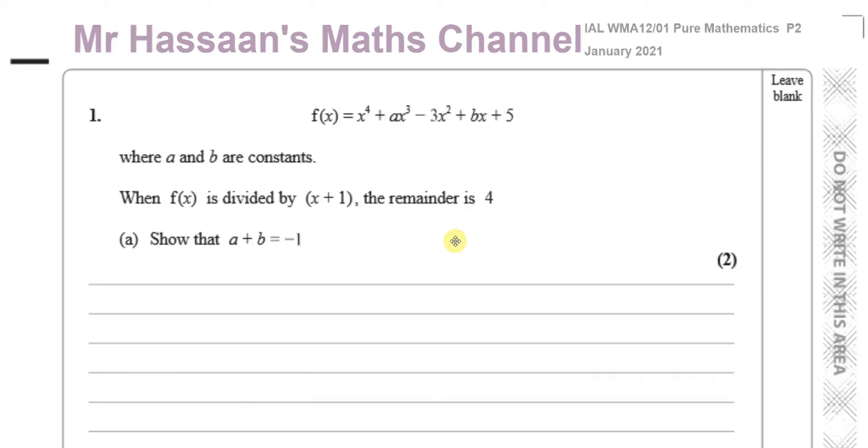Now, question number one is all about what's called the remainder theorem. Here we have a function f(x) = x^4 + ax^3 - 3x^2 + bx + 5, where a and b are constants. It tells us when f(x) is divided by (x + 1), the remainder is 4.